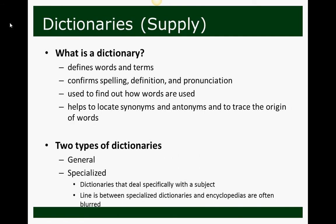Our first reference book that supplies information is the dictionary. At its most basic, a dictionary defines words and terms. We use it to confirm spellings, to find definitions, and to learn how to pronounce words.